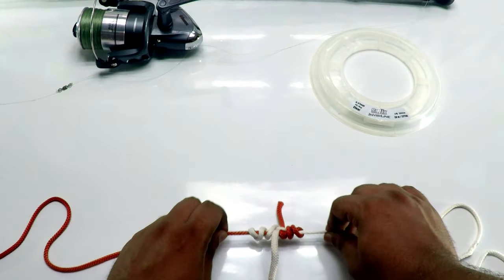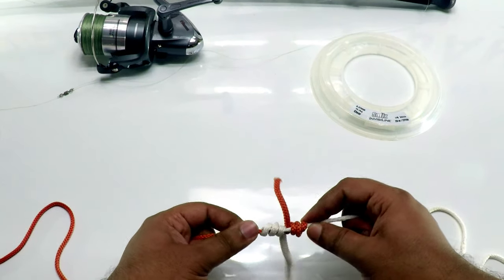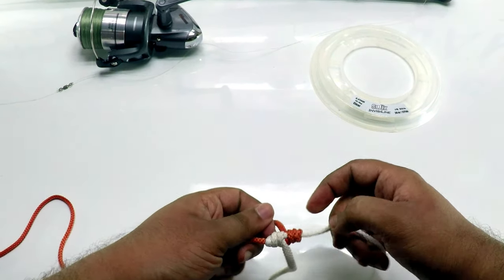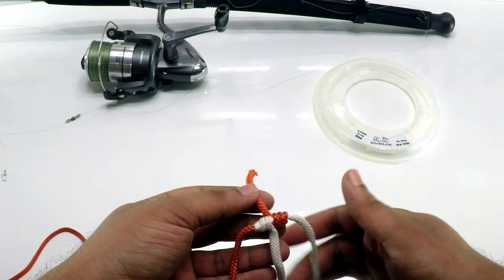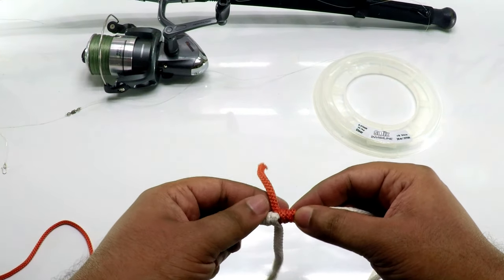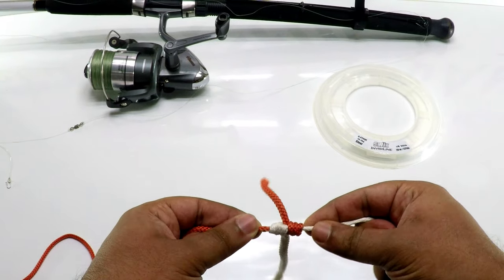For monofilament, you can directly pull it. As long as you push the line slowly, it creates a blood knot. This is how you connect your main line to your shock leader.